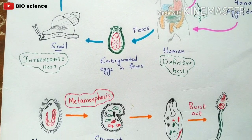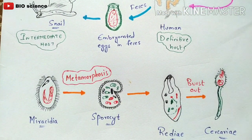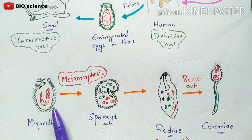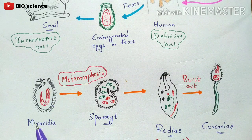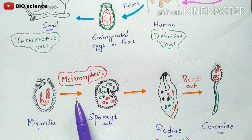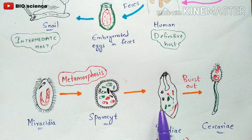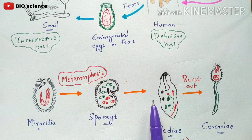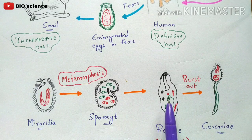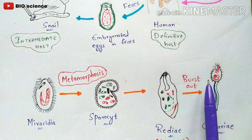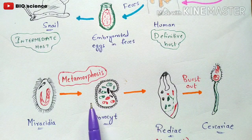Once the eggs get hatched due to the digestive juices in the snail's digestive system, the miracidia present inside are released. The miracidia then undergo metamorphosis and develop into sporocysts. The sporocysts then develop into redia. From the redia, the cercaria — present inside — get protruded out. All of this process — from embryonated egg to cercaria — occurs within the digestive system of the snail.